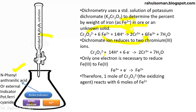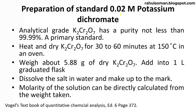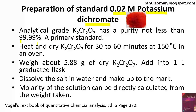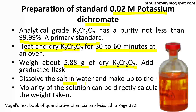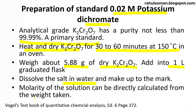For the preparation of a standard 0.02 molar potassium dichromate solution: since it is a high-purity primary standard and a very stable compound, no external standardization technique is required. First, heat and dry K2Cr2O7 for 30 to 60 minutes at 150°C in an oven. Then weigh 5.8 grams of the dry K2Cr2O7 and dissolve in water, making up to 1 liter. The molarity of the solution can be directly calculated from the weight taken.